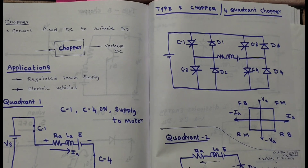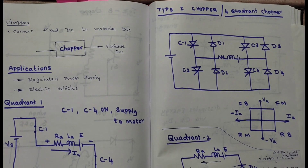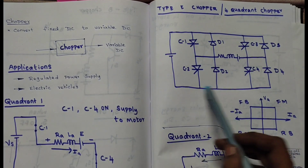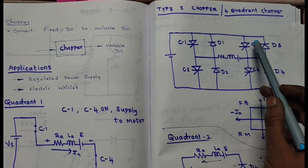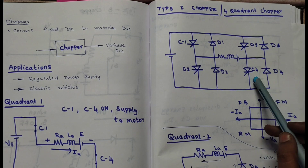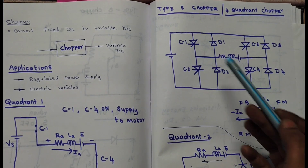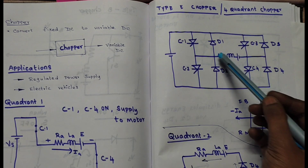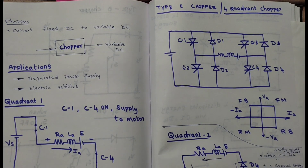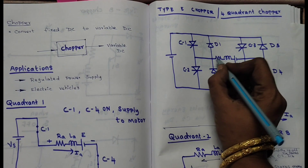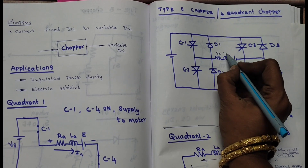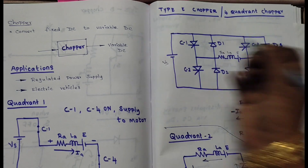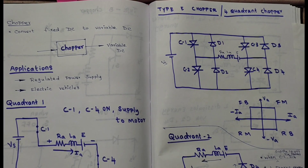Welcome, dear students. Today we are going to see about the 4-quadrant chopper, otherwise called Type E chopper. The circuit diagram shows 4 switches — C1, C2, C3, C4 — with diodes D1, D2, D3, D4 connected in parallel to the switches. Between the two legs, there is RA, LA, and E, which is the motor, and VS is the supply.